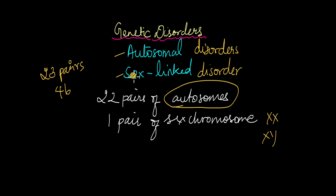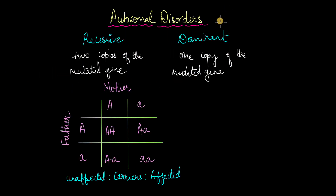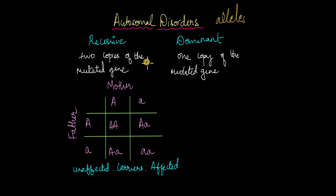We will take a closer look at the inheritance pattern of these disorders in this video and talk more about examples in future videos. First, let's take a look at autosomal disorders. We know that for each gene, you have two copies or two variants known as alleles, and for each allele you have two variants: the dominant variant and the recessive variant. In the case of autosomal dominant disorder, just one copy of the mutated gene or mutated allele is enough for the disease to be expressed.